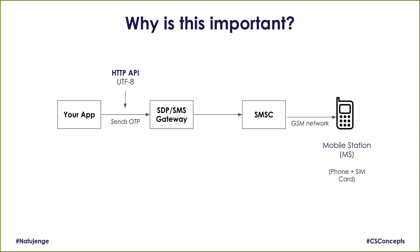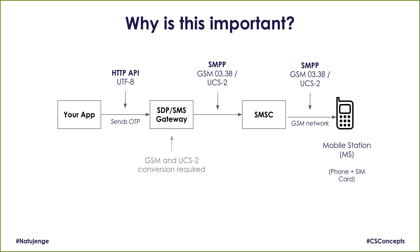Your app will communicate with SMS gateways via HTTP API using UTF-8. But on the network, mobile telephone systems don't use UTF-8 for SMS — they use GSM 7-bit, or UCS2 if the characters are outside the GSM 7-bit range. The SMSC has to forward the data in GSM 7-bit or UCS2, and the SDP must do the transformation. You'll hear terms like 'GSM conversion required' or 'UCS2 conversion required.'